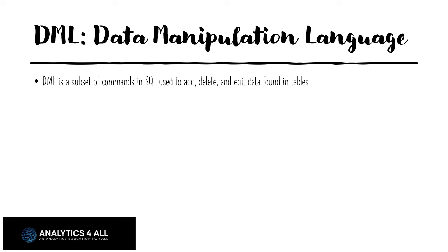So DML is Data Manipulation Language. This contains things like add, delete, and edit data found in the tables. We have words like insert — that's how you can load data into a table. Update — that's how you can edit the data that's in the tables. Delete and truncate: people confuse these two because what they both do is delete the data within a table, but the table will sit there empty. Truncate — if I type truncate table A, all the data is gone from that table; the table still sits there but the data is empty. If I use delete table A, all the data is gone from the table. But delete allows me to add one more feature, which is a where clause. So I can say delete from table A where record is older than four years. It'll go through and delete all records older than four years, and everything younger than four years is still going to be in the table. Whereas truncate table A, it's all gone — there is no where clause.